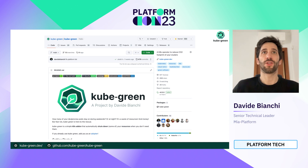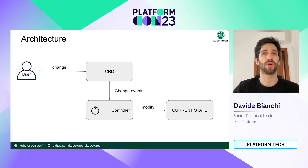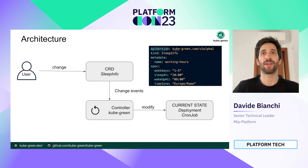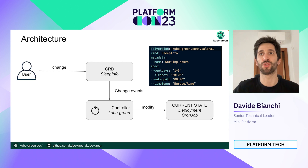We can do this with KubeGreen. KubeGreen is an operator available on GitHub, and it's possible to try it yourself. The architecture of a Kubernetes operator works like this: when a user changes a custom resource defined in the cluster, Kubernetes triggers a change event to the controller, which modifies the current state to align to the desired state. In KubeGreen, the custom resource is called SleepInfo. The controller modifies deployments and CronJobs, which are the currently supported Kubernetes resources, with plans to support more in the future.